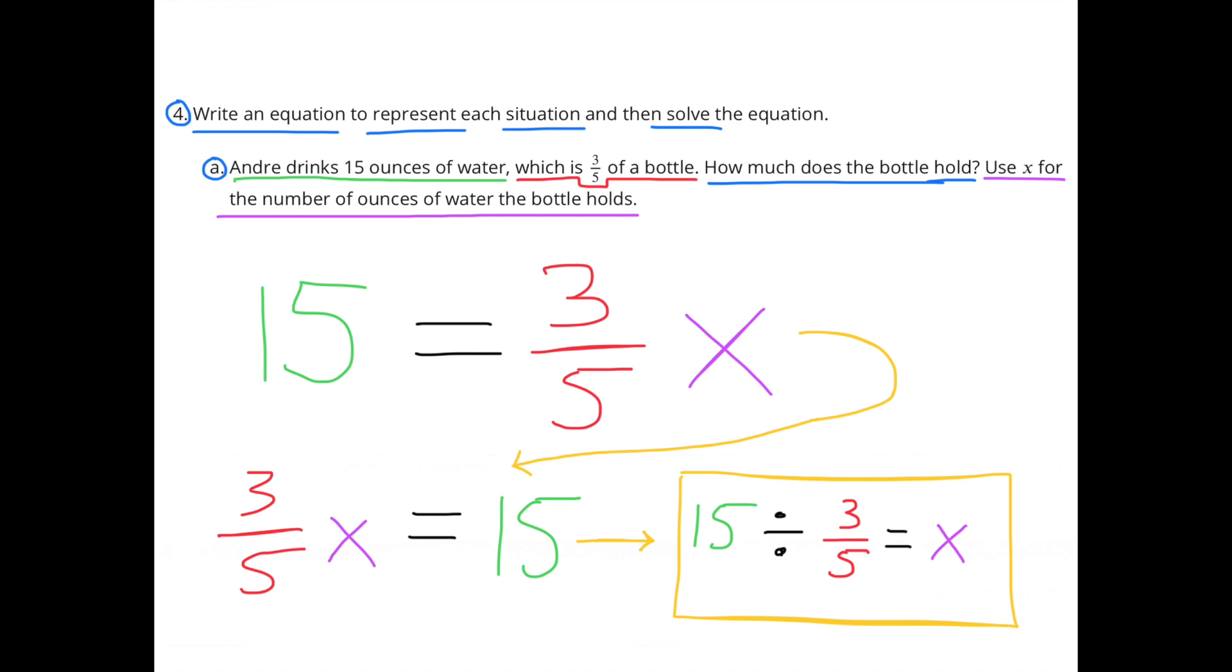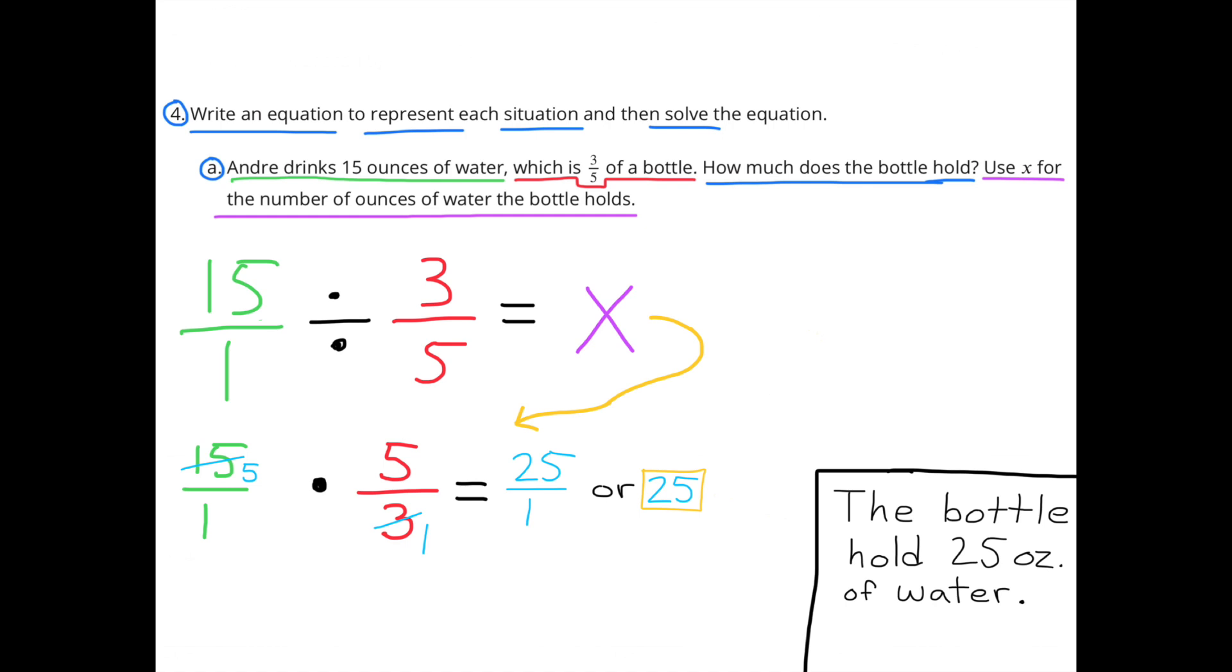15 equals three-fifths x, or 15 equals three-fifths times x. That can be rewritten as three-fifths times x equals 15. To solve for x, I'm going to divide 15 by three-fifths. To solve that, I'm going to multiply by the reciprocal of three-fifths. So 15 times five-thirds. 15 times five-thirds is 25. The bottle holds 25 ounces of water.